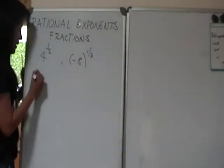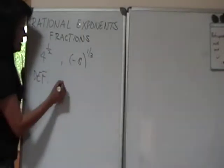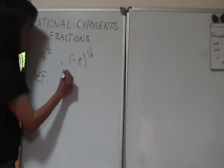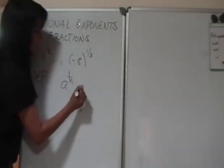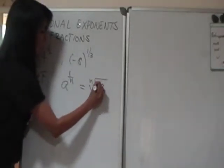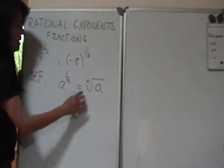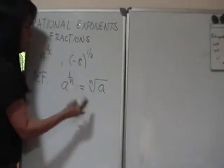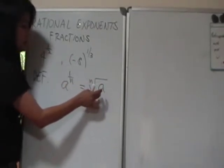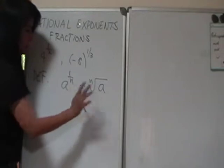Well, actually we define, let's say if we have a real number a raised to the 1 over n, we define this to be the n's root of a. Let's assume that a is something that's valid, and I'll show examples of what I mean by this.